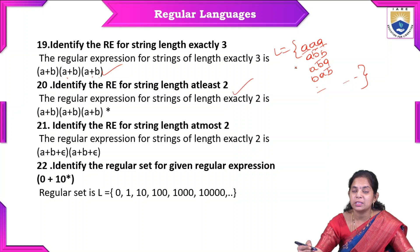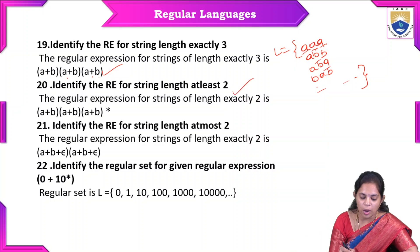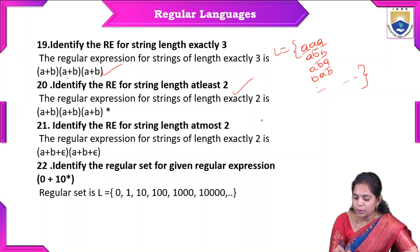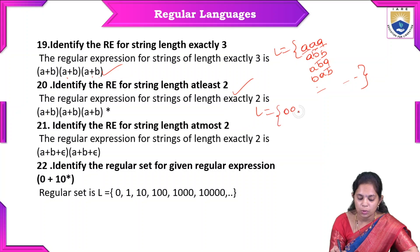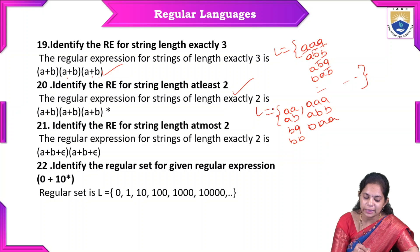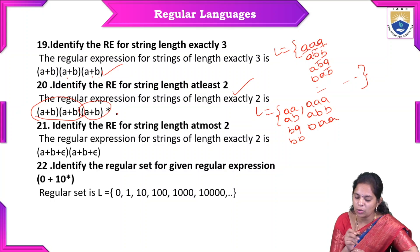Example: string length at least 2. Here, the length 2 is mandatory. So we need at least two characters: (a+b)(a+b), which is must. After that, how many additional characters can follow? Any number. So we write the ending as (a+b)*, making the full expression (a+b)(a+b)(a+b)*.